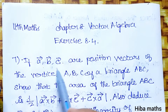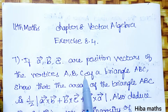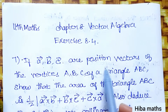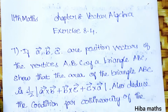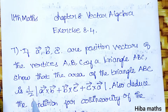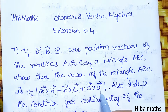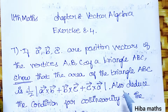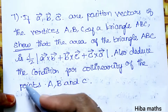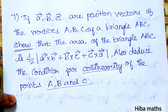If A vector, B vector, C vector are position vectors of the vertices A, B, C of a triangle, show that the area of triangle ABC is 1/2 times the magnitude of (A×B + B×C + C×A). Also, deduce the condition for collinearity of the points A, B, C.